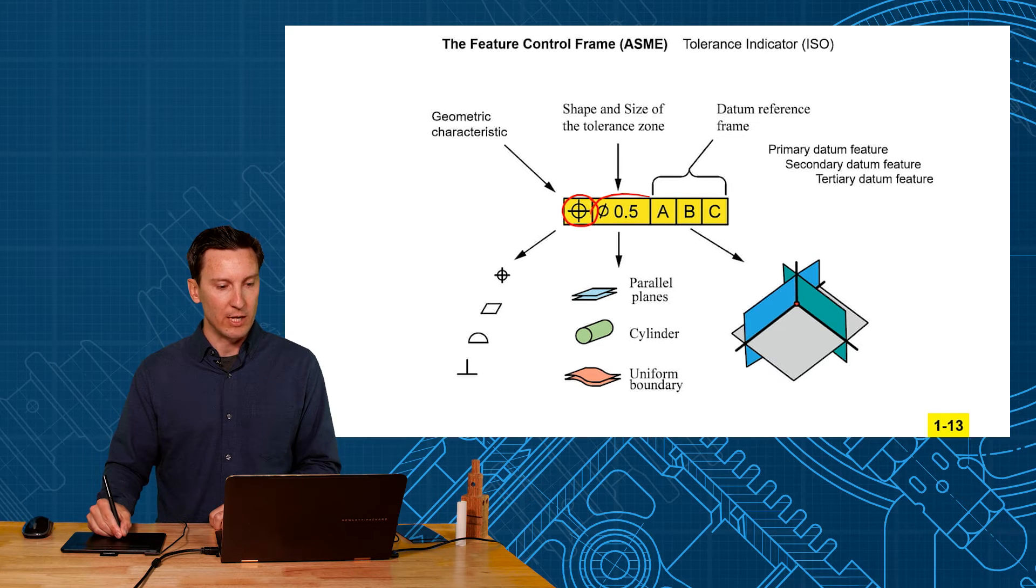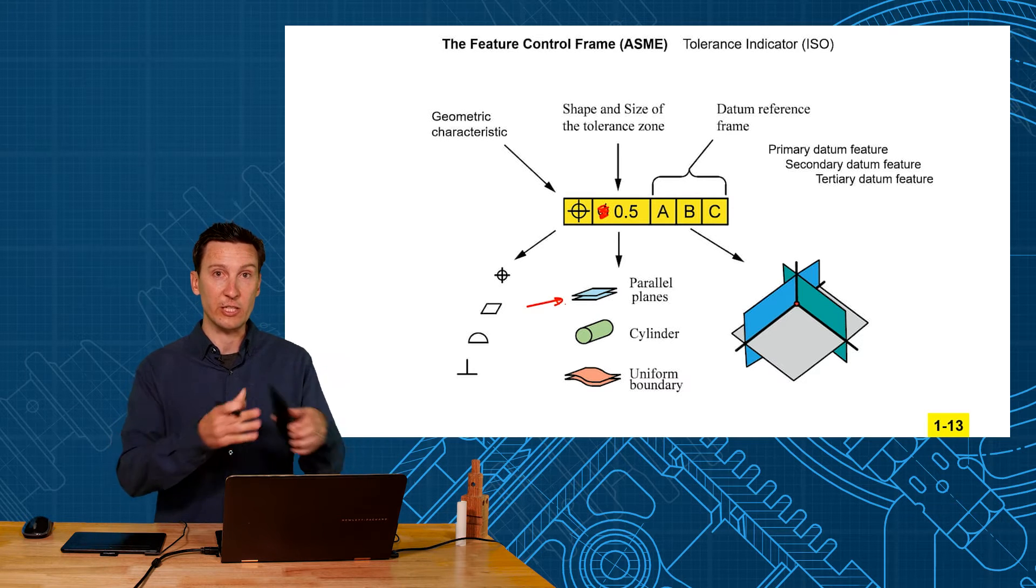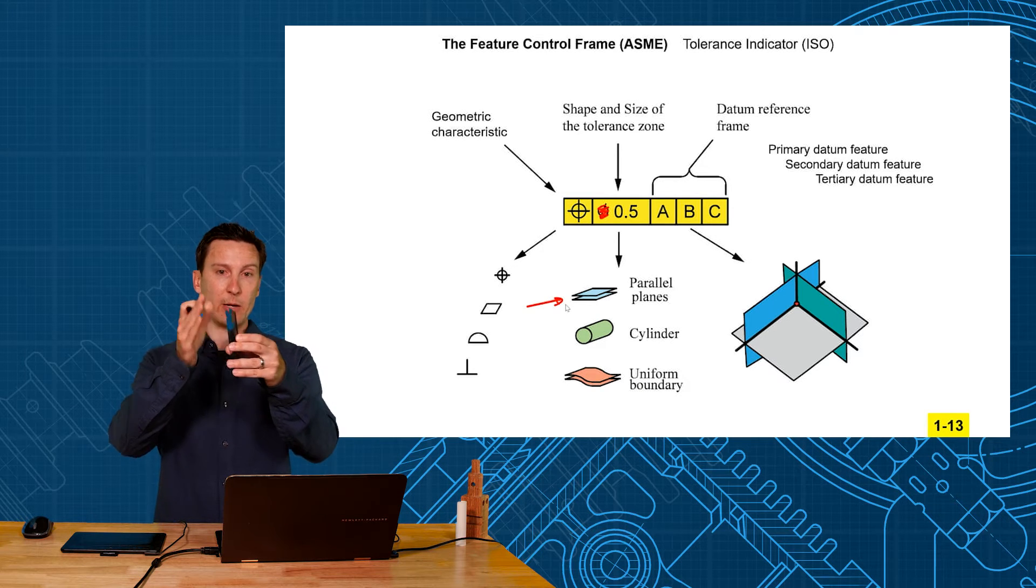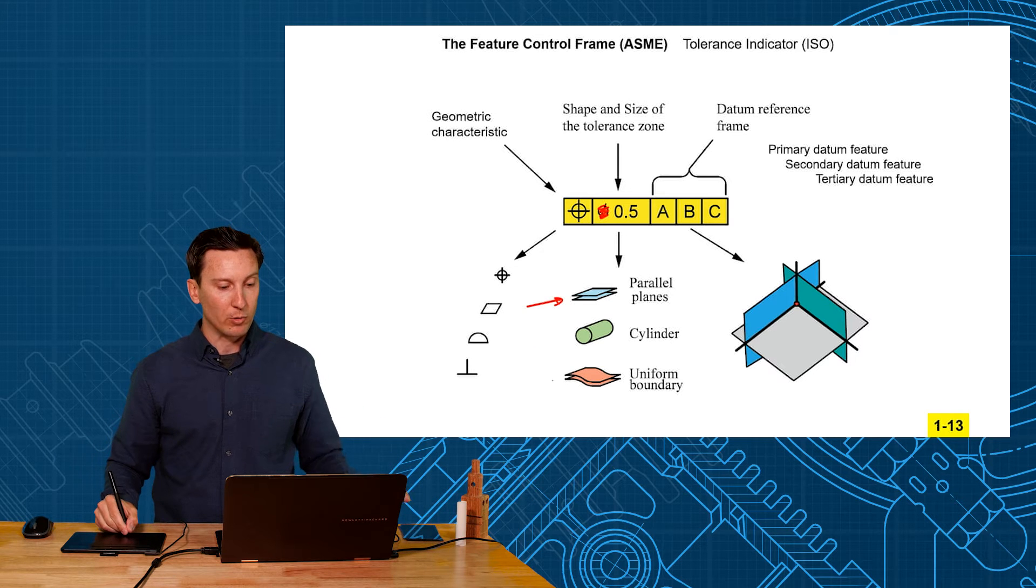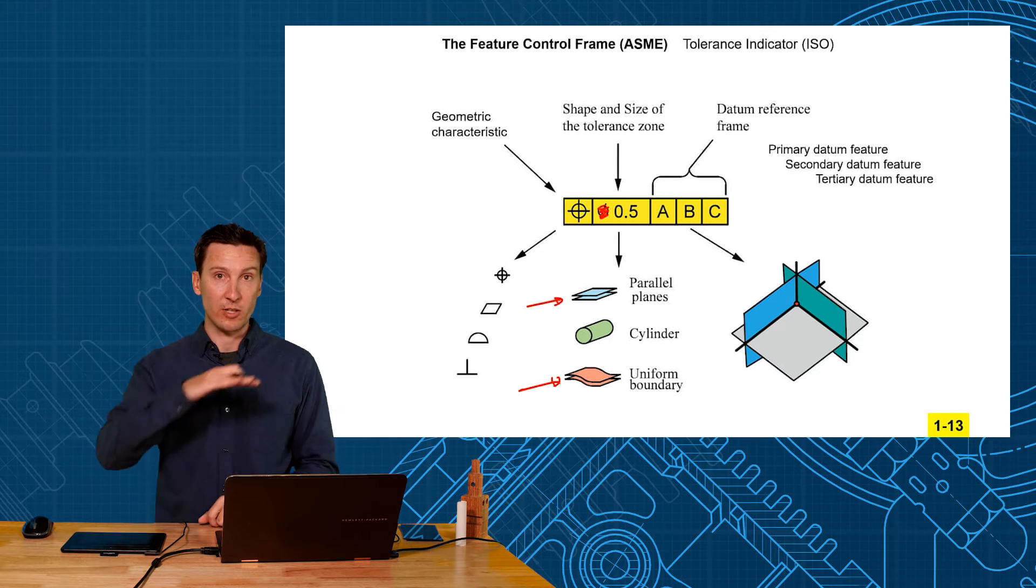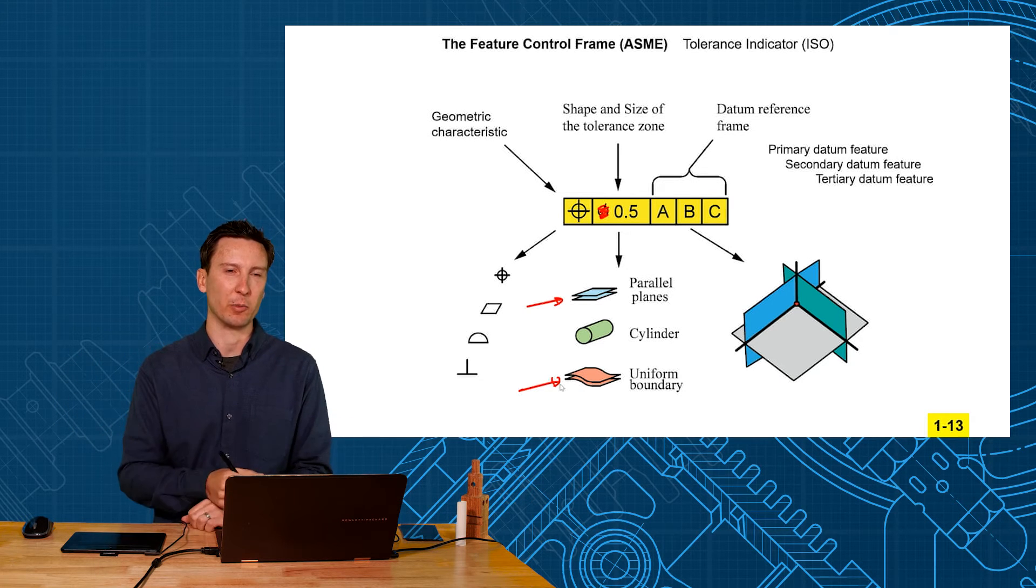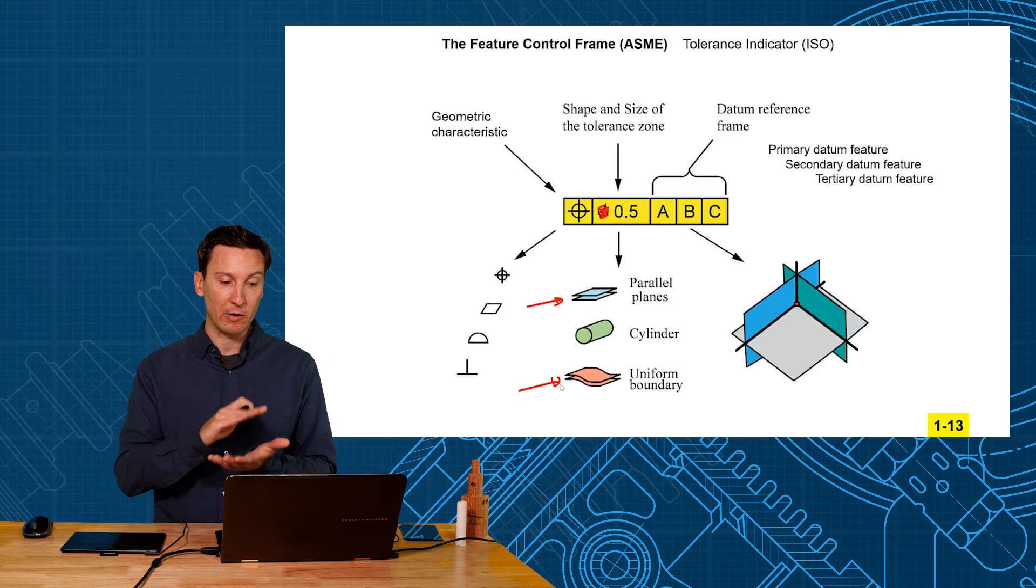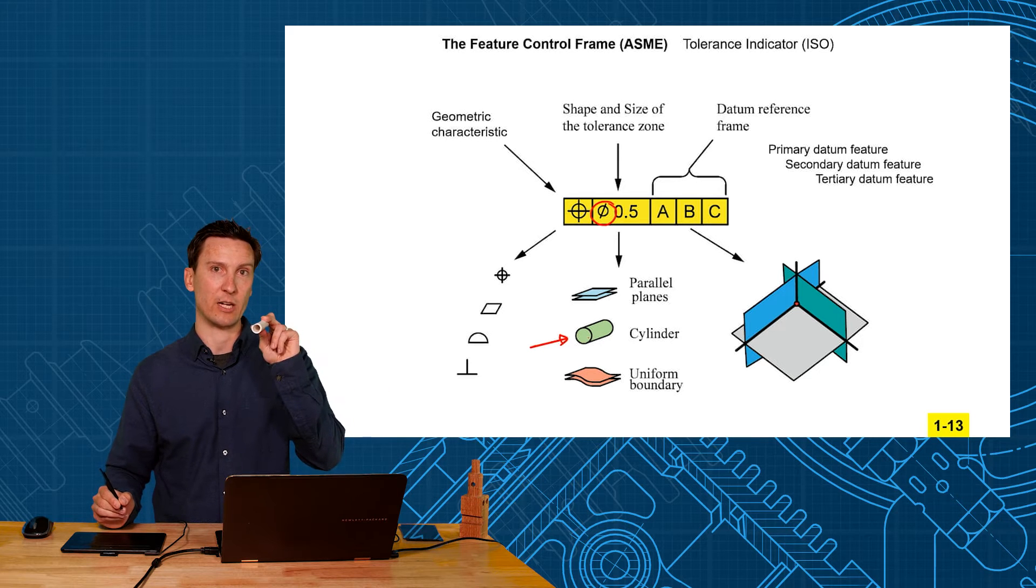Then you indicate the shape and size of the tolerance zone. The default shape if you don't have any symbol is two parallel planes. That's the default shape of the tolerance zone in which your surface or center plane has to lie within. This also applies to irregular surfaces like a profile - then you have parallel boundaries. If you don't want the parallel planes default, you can add the diameter symbol and that will change the tolerance zone to a cylindrical tolerance zone instead.